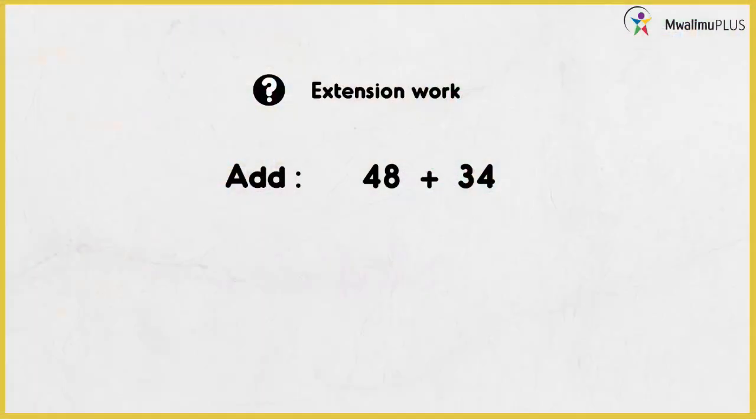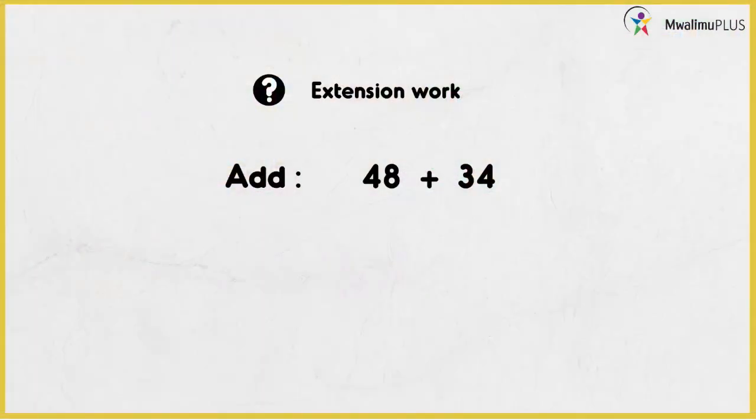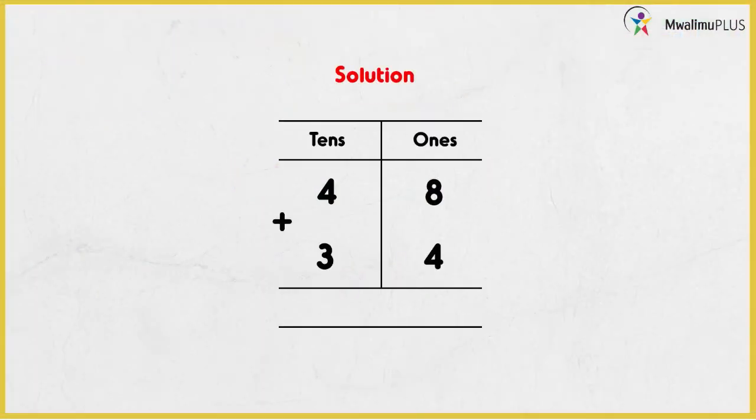We're going to arrange the numbers in their place values, then we add. Check on the screen — that's how we write the numbers in their place values. 48: you write 8 in ones and 4 in tens. 34: you write 4 in ones — 4 should be below digit 8 — then 3 in tens, and 3 should be below digit 4. Write the addition sign. We add from the right going to the left, meaning you start adding from the ones before you go to the tens.